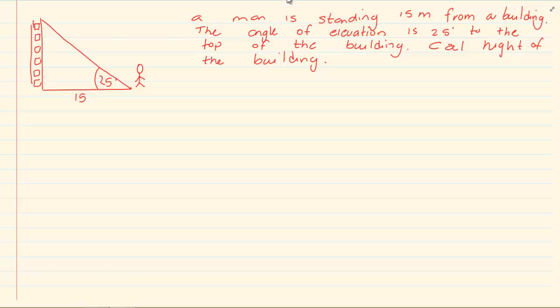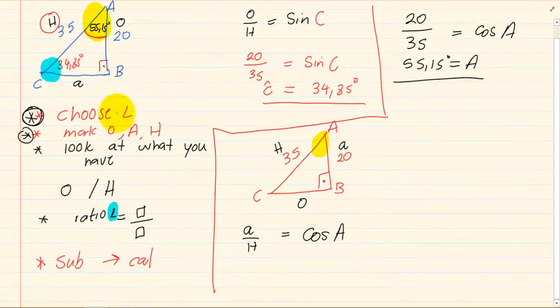Now look at the previous rules of triangles where we had said you'd always choose an angle, you'll mark your O, A and H, you'll look at what you have and then you'd calculate it from there.